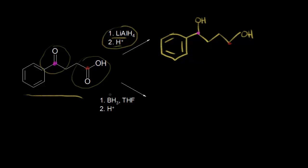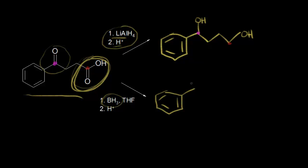If we did this reaction with borane — BH3 instead — borane is actually chemoselective for the carboxylic acid group only, so it's only going to reduce that. If we draw the product using borane, we would have our benzene ring and the borane wouldn't touch the ketone, so that is left. It would reduce the carboxylic acid, turning it into a primary alcohol. So borane is considered to be better sometimes because of its chemoselectivity — it will only reduce your carboxylic acid group, which is very beneficial when you're not looking to reduce other parts of your molecule.